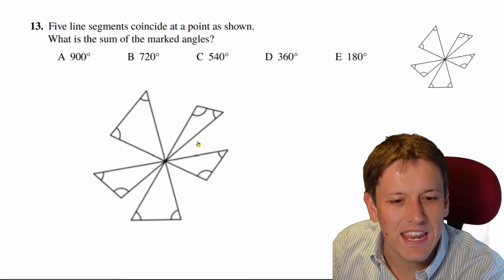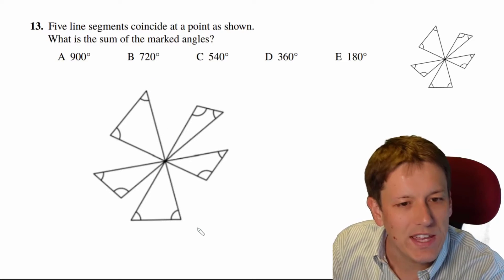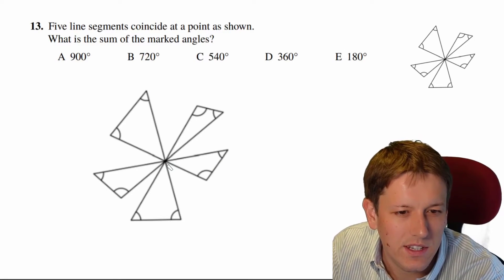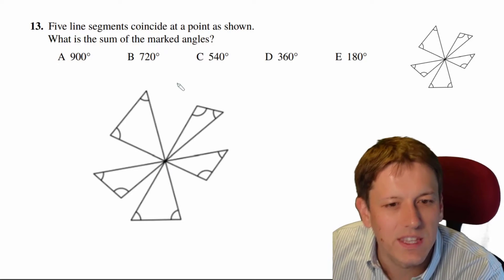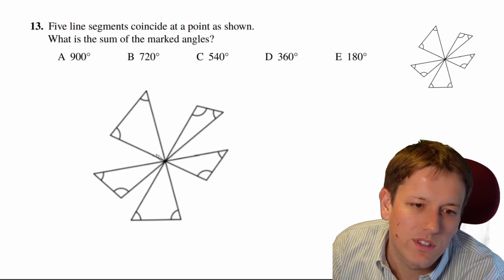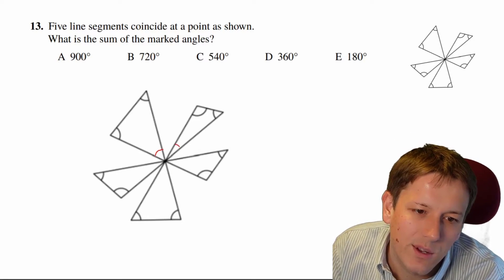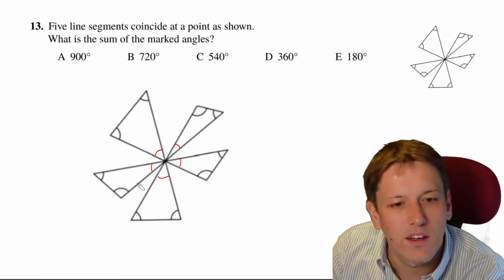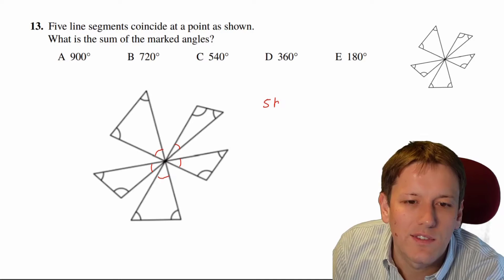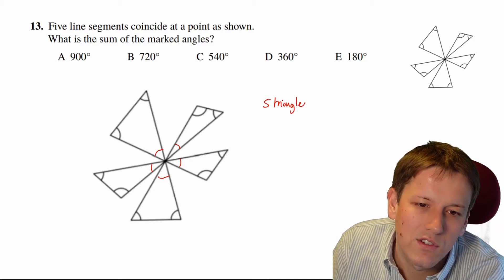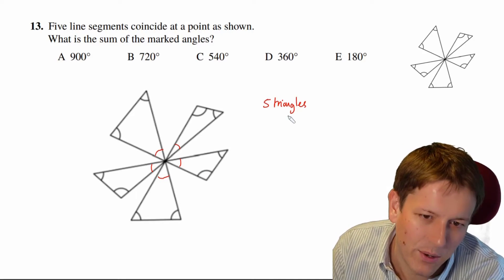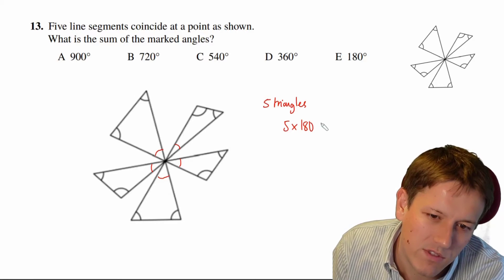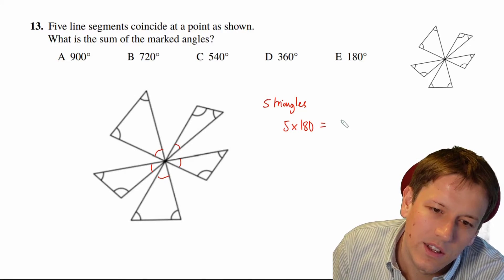So I hope I didn't give too much away on the hint here. We've got five line segments coinciding at this point as shown. I want to know what the sum of the angles is. If we just wanted to know if we included all of these angles as well, these red ones, then together with the red ones we would just have five triangles that have all the interior angles of the triangle so it would be 5 times 180 which is 900.